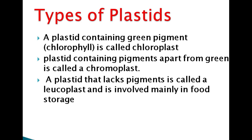There are three types of plastids. The first type contains the green pigment chlorophyll and is called chloroplast. The second type contains pigments other than green and is known as chromoplast. The third type lacks pigment and is known as leucoplast, which is involved in food storage.